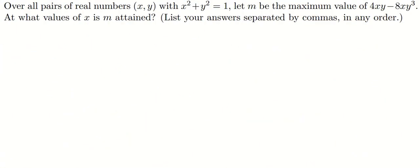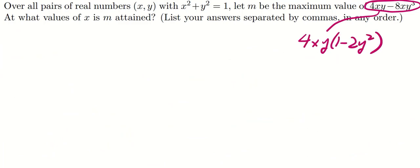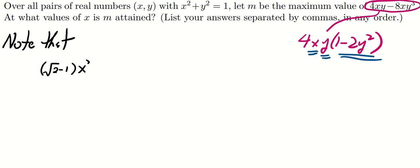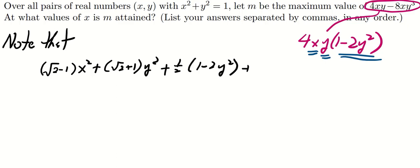First, note that 4xy minus 8xy cubed can be written as 4xy times (1 minus 2y squared). We need to have some terms in x, y, and (1 minus 2y squared). After some trial, one possible way to get terms involving x, y, and (1 minus 2y squared) is to consider: (sqrt(2) minus 1)x squared plus (sqrt(2) plus 1)y squared plus half(1 minus 2y squared) plus half(1 minus 2y squared).